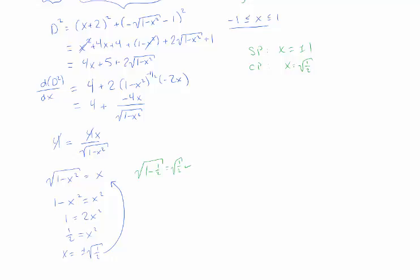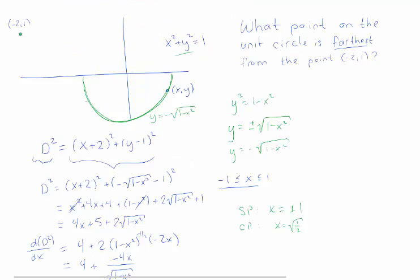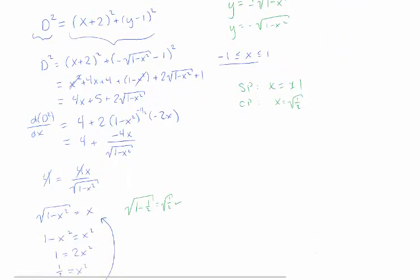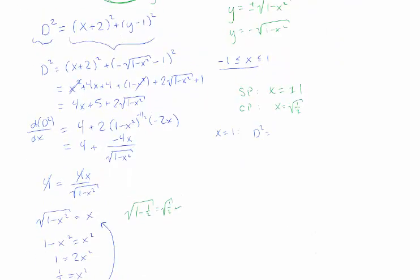So I have a function. I want to find the biggest it gets over some interval. It's enough to check the end points, the critical points, and the singular points. Now, if we want to be a little clever, it's pretty clear that the maximum distance isn't going to happen when x is minus 1. Certainly, there are points that are further away than that. So we can maybe just be a little efficient slash lazy and only consider x is equal to positive 1 and x is equal to the square root of 1 half. So maybe I'm going to use this simplified version of the distance formula.